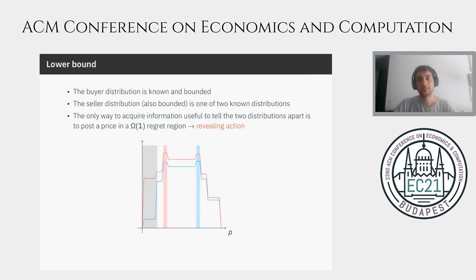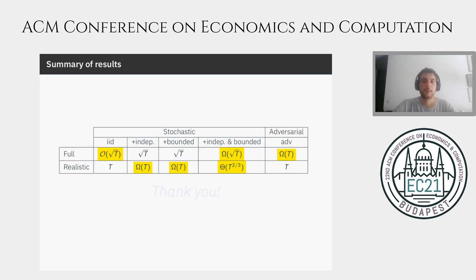Just as we saw a correspondence between full feedback and prediction with experts, here we see a strong correspondence between realistic feedback and the revealing action case in partial monitoring. To recap our results: in the adversarial case, there is no way to achieve sublinear regret. In the stochastic setting with full feedback, √T is the right regret. Finally, in the realistic feedback case, T^(2/3) is the tight regret, achievable when we assume the random variables are independent and admit bounded densities. I hope you enjoyed the talk — thank you for your attention and see you at the poster session.